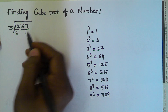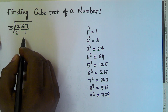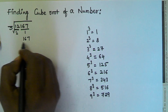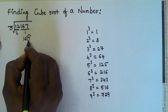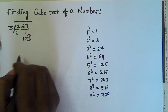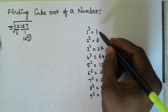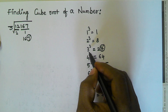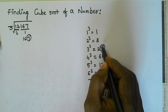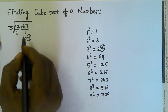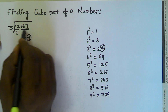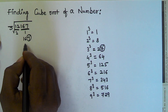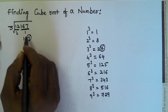Step 2: consider the rightmost part, that is 167. Take the rightmost digit, which is 7. Now 3 cube is 27, which ends with 7, so the corresponding cube root digit for this part is 3.